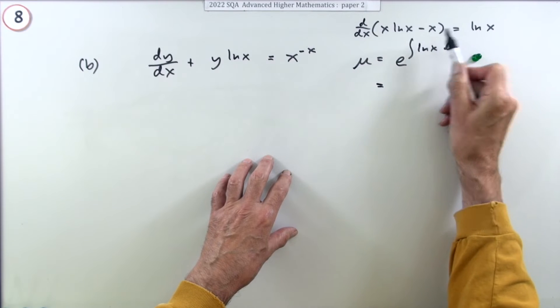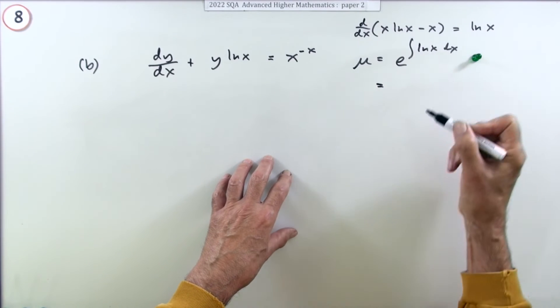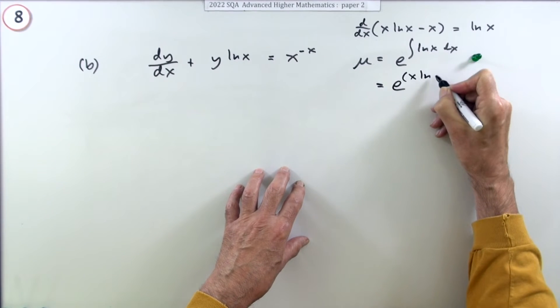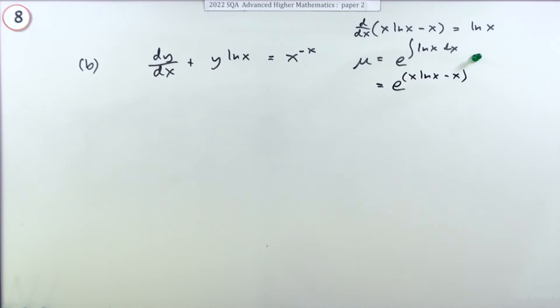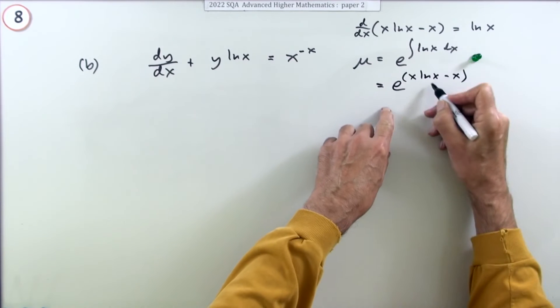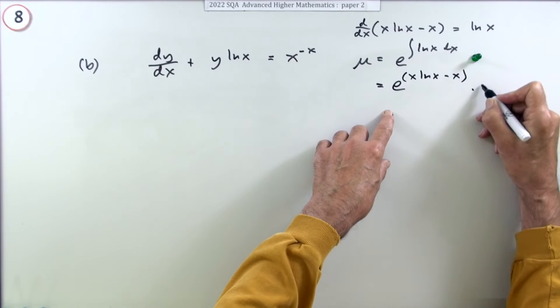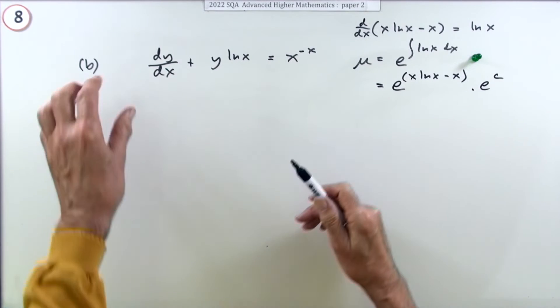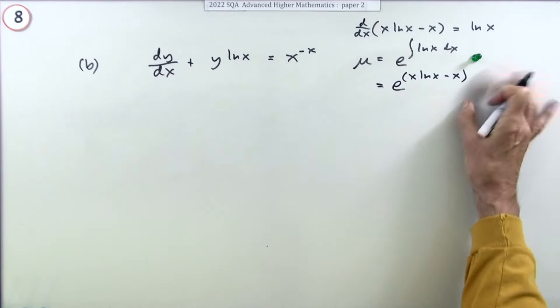And now immediately you already know that result because in part a if you differentiated this to produce ln(x), then in reverse integrating ln(x) will give you this back again. So that's just going to be e^(x*ln(x) - x). Yes there would be a plus c in there as well, but if you've got e to the something plus c, that could split into e to the something times e to the c, and that's just a constant. So when you multiply everything by it that would just disappear.